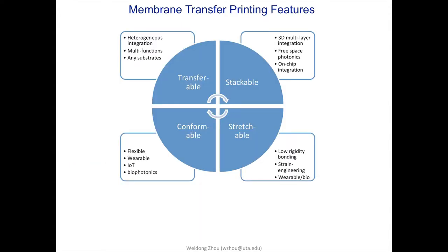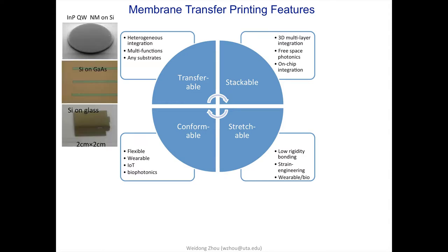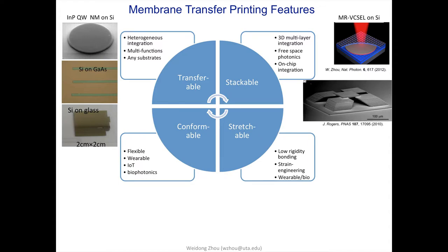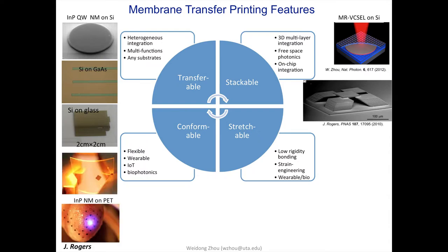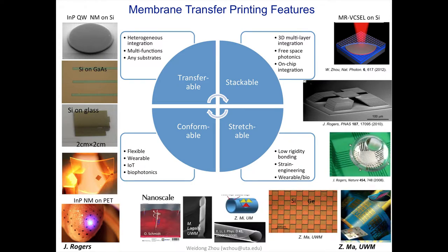To summarize the features: the membrane is transferable for heterogeneous integration — we've transferred III-V onto silicon, silicon onto gallium arsenide, silicon onto glass, essentially anything to anything. It enables 3D integration with multilayer stacking, for example a VCSEL-type structure with two mirrors and a gain medium sandwiched between them using a two-layer transfer. The process is also conformal — you can use flexible substrates, or as John Rogers demonstrated, place devices on the heart for bio-integrated photonics. It's also stretchable; you can do strain engineering and make bendable devices, conformal imagers, or flexible high-speed electronics.